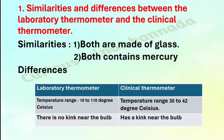Differences between them: Laboratory thermometer temperature range is minus 10 degree to 110 degree Celsius. Clinical thermometer temperature range is 35 to 42 degree Celsius. Laboratory thermometer has no kink near the bulb, whereas clinical thermometer has a kink near the bulb.